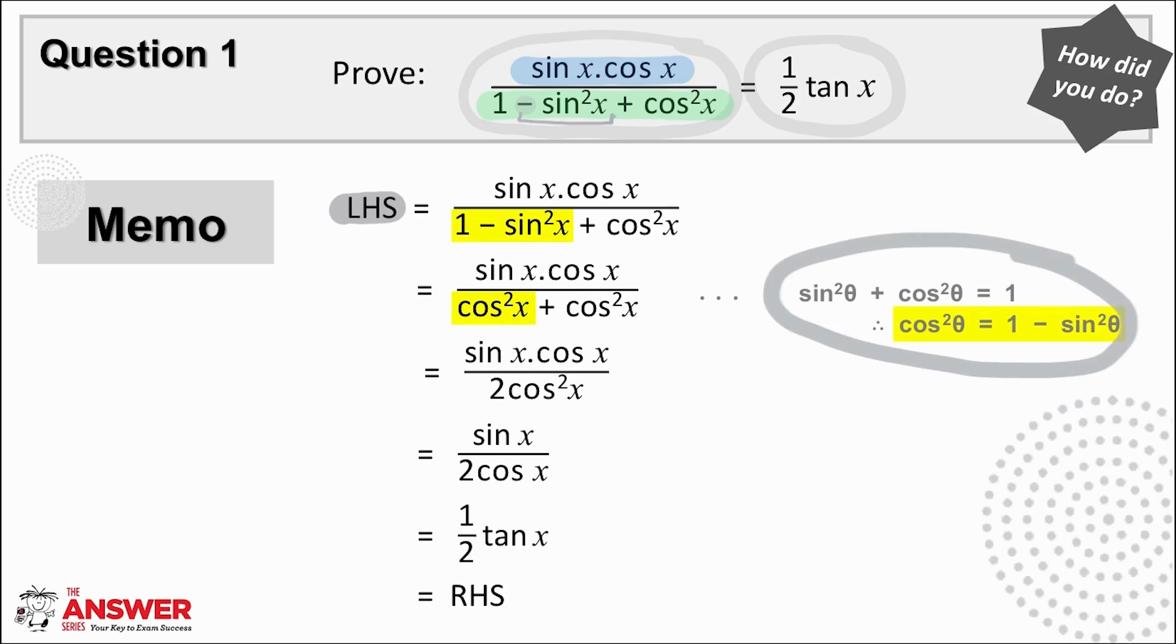You may need to get used to going with your ideas one step at a time and not necessarily knowing how it's all going to unfold. I often say think with your ink, meaning write things down as you think of options to try rather than imagining in your head how they may work out. In this case, as we write in cos²x we see there are now like terms in the denominator.